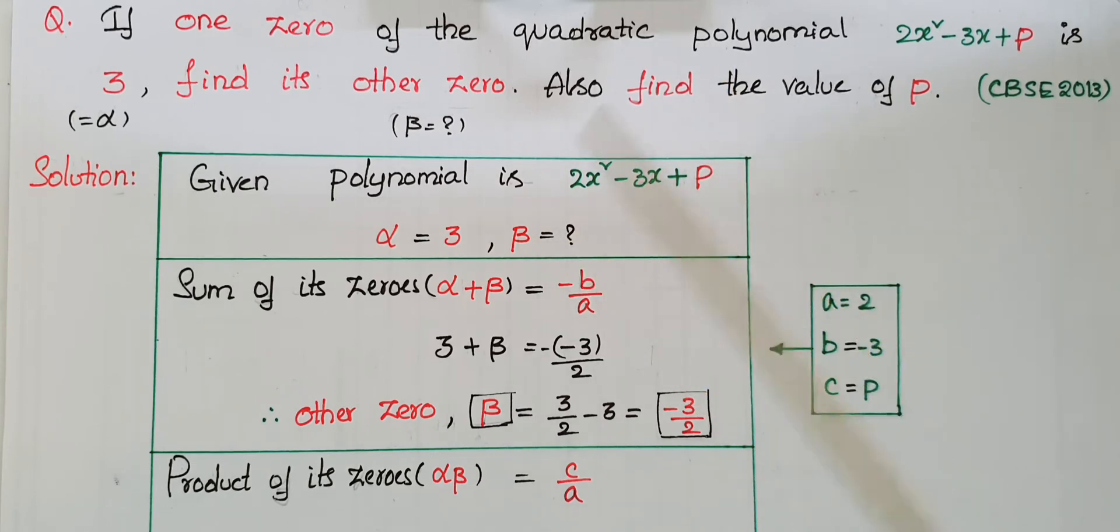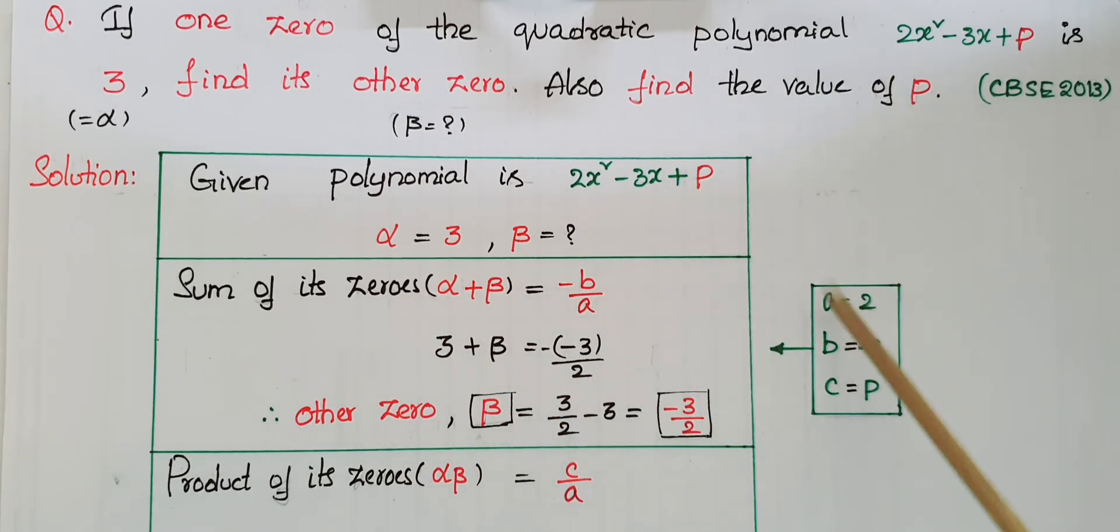Sum of its zeros: α + β = -b/a. Here a = 2, b = -3, c = p. Since α = 3, we have 3 + β = -(-3)/2, which equals 3 + β = 3/2.